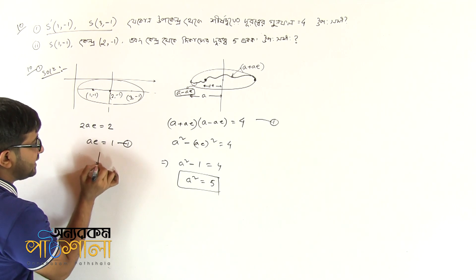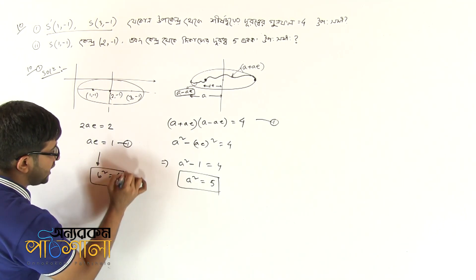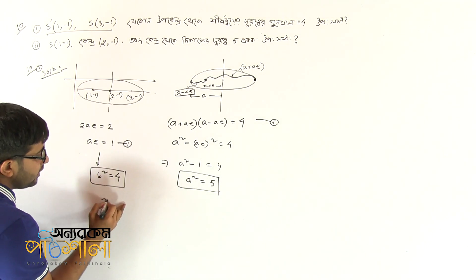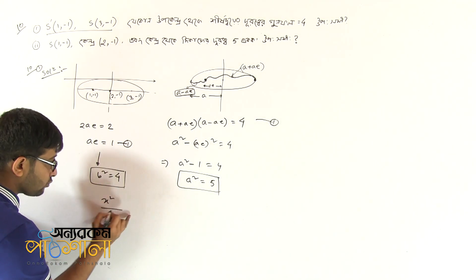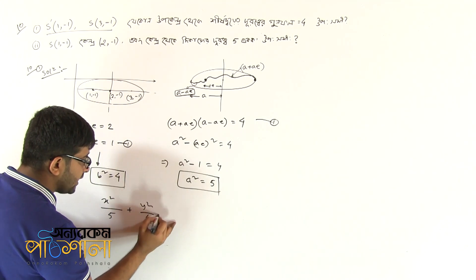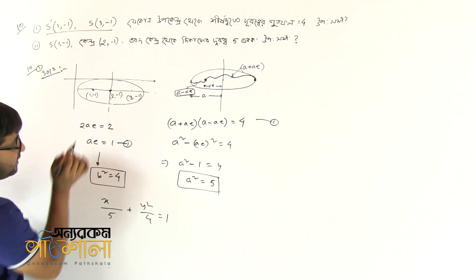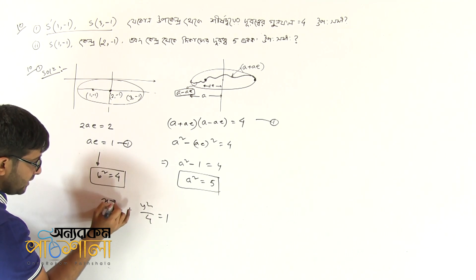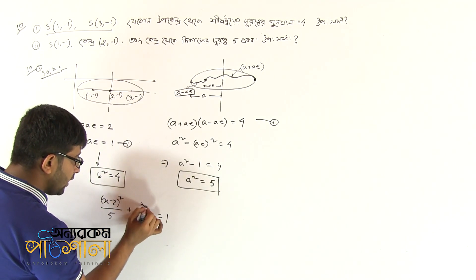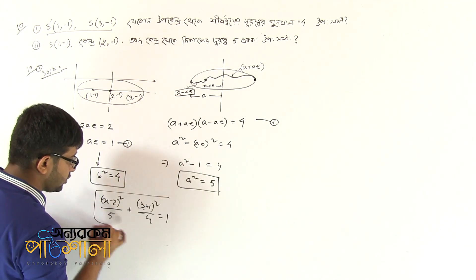If you have to write this equation, you can write b squared. Maybe 4. If a squared is 5 and 4, then what equation does it? x squared by a squared plus y squared by b squared equals to 1. If you write this equation, you can shift the curve. Then x minus 2 whole squared by a squared plus y plus 1 whole squared by b squared equals to 1. That's the equation.